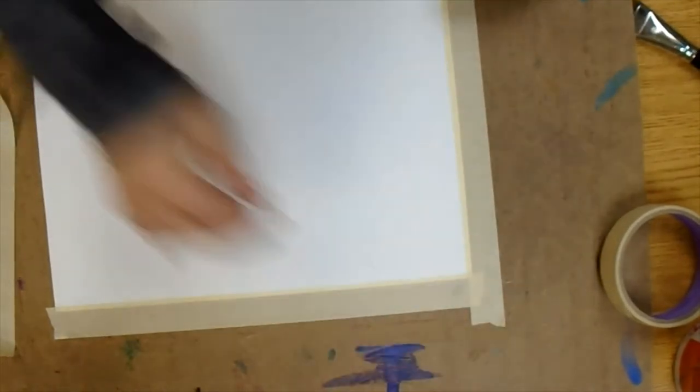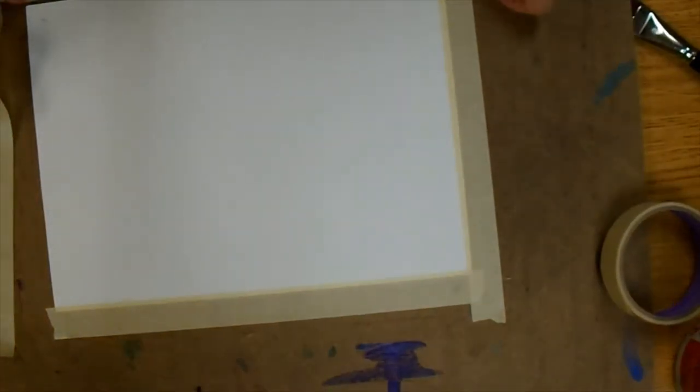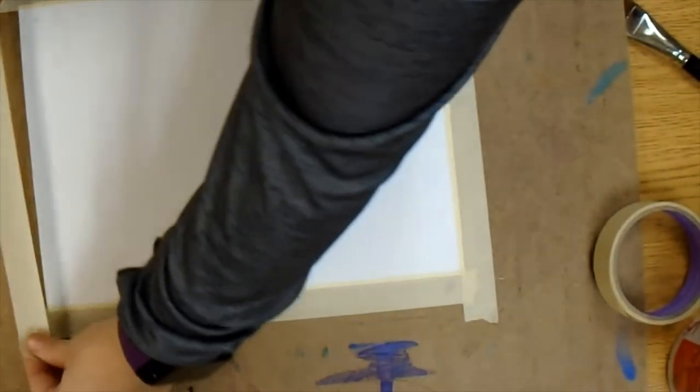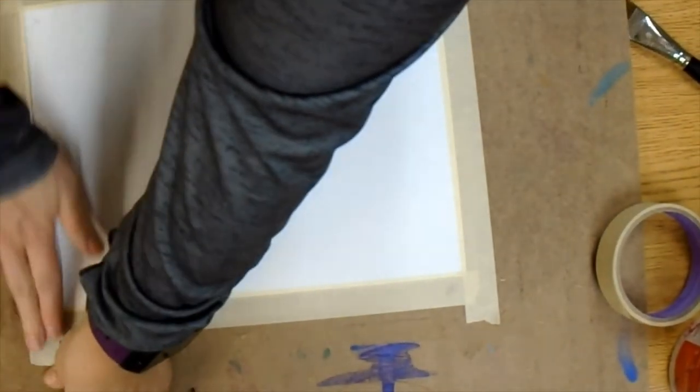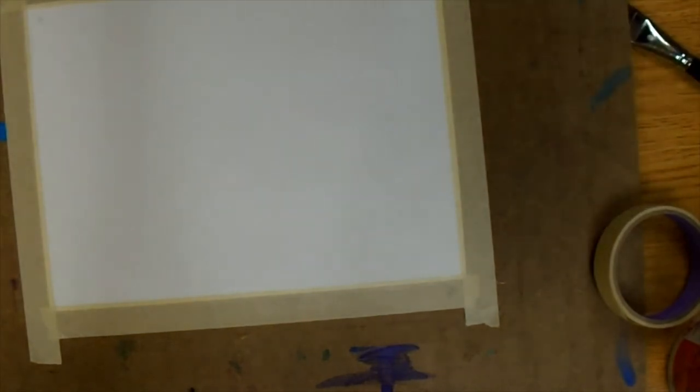The reason we dry stretch is because when you paint on paper, the paper is going to wrinkle. But when you dry stretch, it will dry flat overnight. So you need all four sides of that paper taped down in order for it to dry flat overnight.